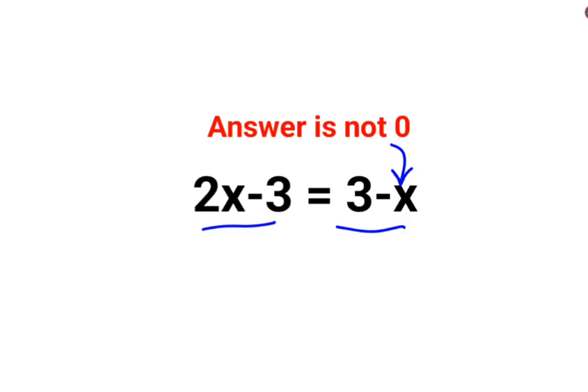So here, if you realize when you put x as 0, you will get this as minus 3 and here you will get this as 3. So they are obviously not equal to each other.